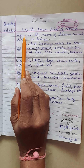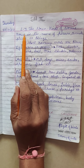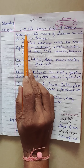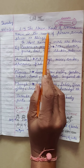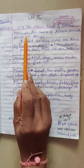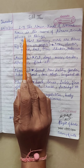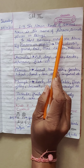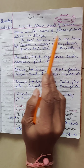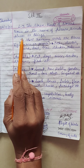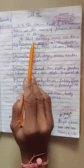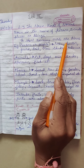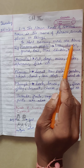Good afternoon children. Today I am going to start chapter number 3 - The Noun, Kinds of Noun. Noun is the name of persons, animals, places or things. In short, naming words are nouns.